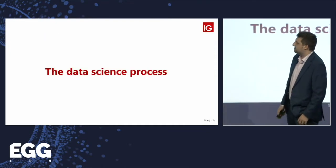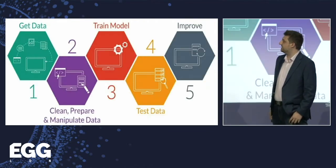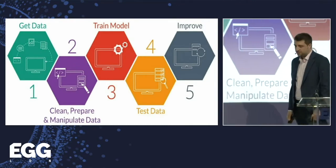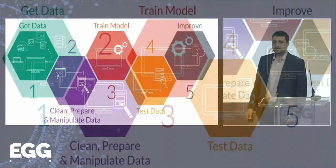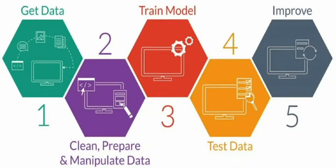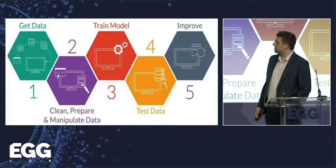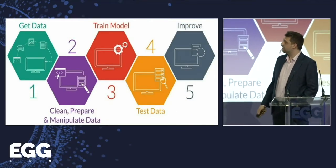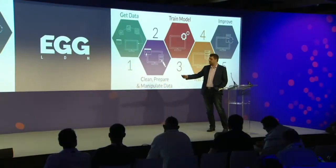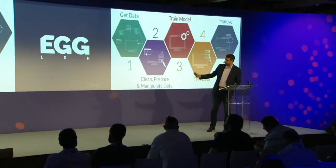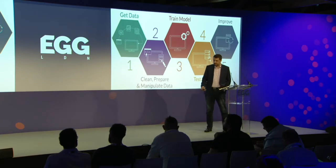So what is the data science process? Roughly, it's something like this — this should be familiar to most of you. You start by collecting your data, which usually takes months, then clean, prepare, and manipulate it. Training and testing happens as quickly as possible, and then you improve again and again. Pretty standard: get the data, play with it, train a model, then make it better.